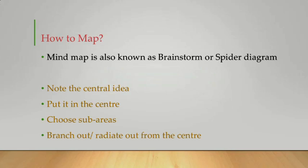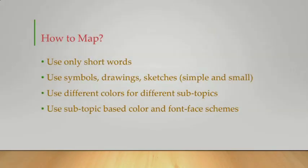So how to mind map in the best possible way? A mind map is also known as a brainstorm or a spider diagram. The central idea has to be noted and placed at the center of the page — on a drawing board or software. Then you have to choose the sub areas and allow them to radiate out from the center. You should write only short words in a map. If you use small and simple sketches or drawings to attract attention, that makes the map more interesting. Mind mapping can be done on plain paper, on a whiteboard, or even on a computer screen, as there are plenty of mapping softwares readily available for creating artistic and attractive maps.